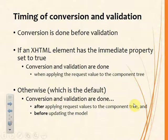Conversion is done before validation. Exactly when that happens depends on whether the 'immediate' property has been set to true or false — the default is false. If immediate equals true on an input element, conversion and validation are done when applying values to the component tree. If immediate is omitted or false, conversion and validation are done after populating the component tree and before populating the managed bean.